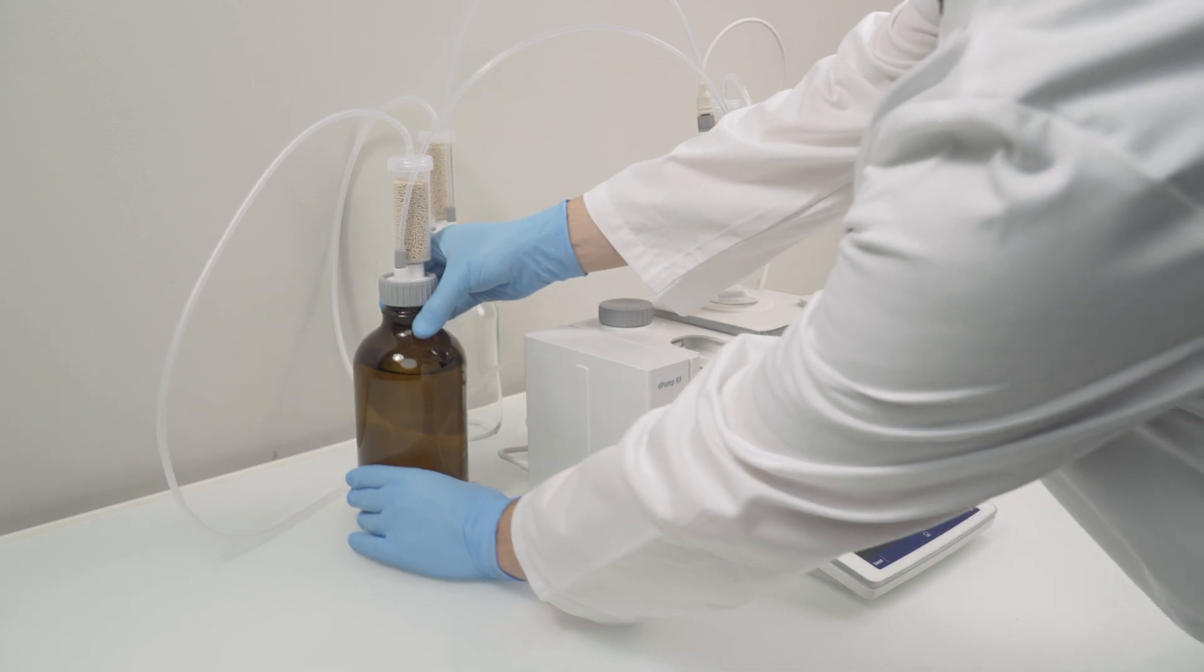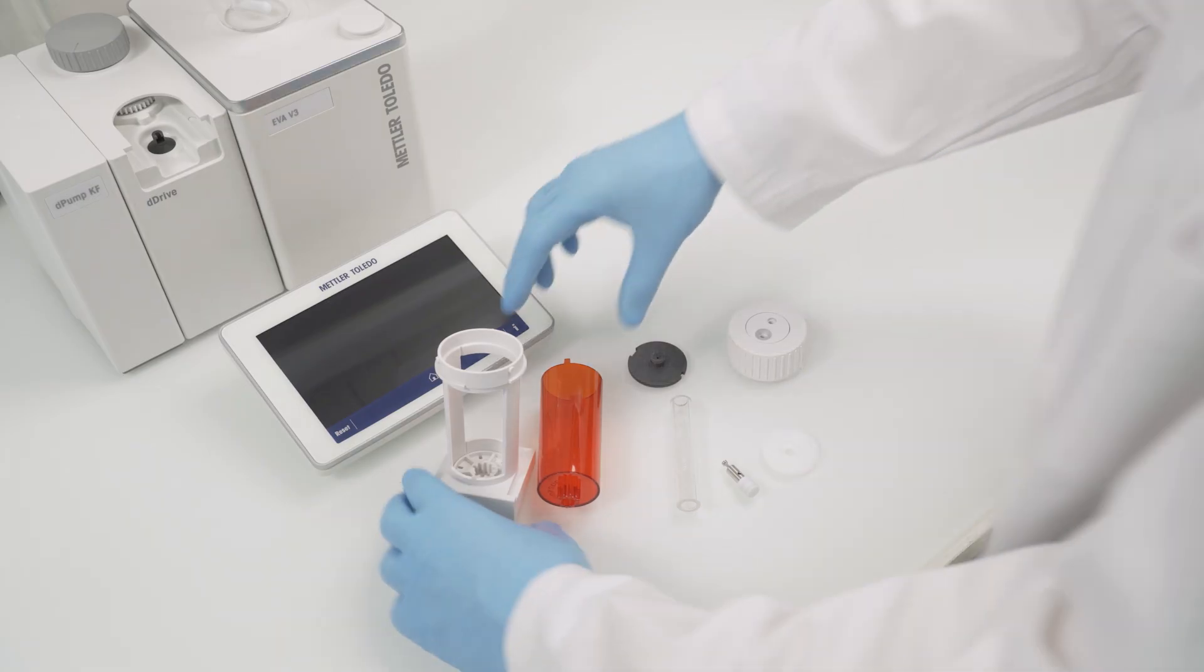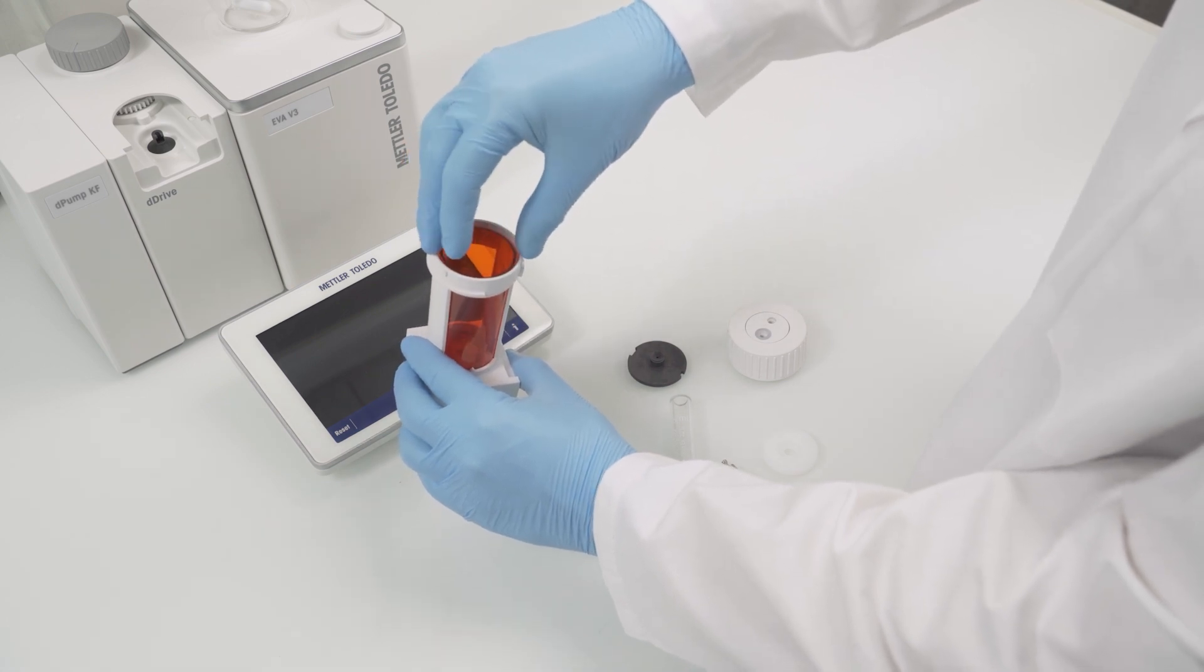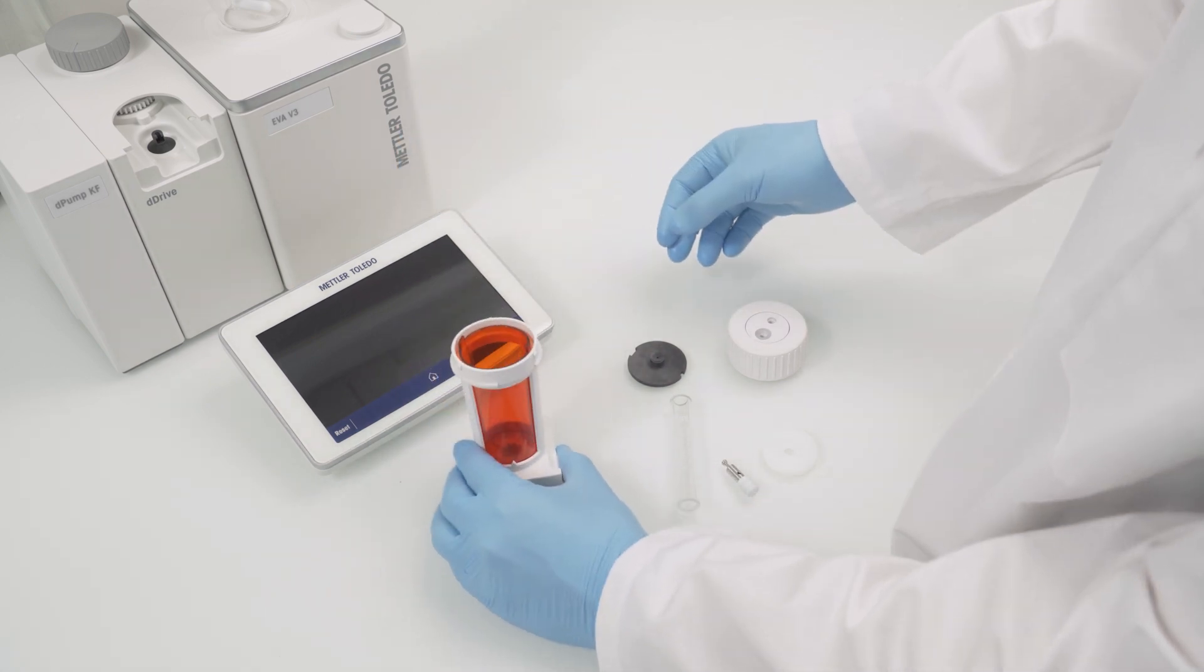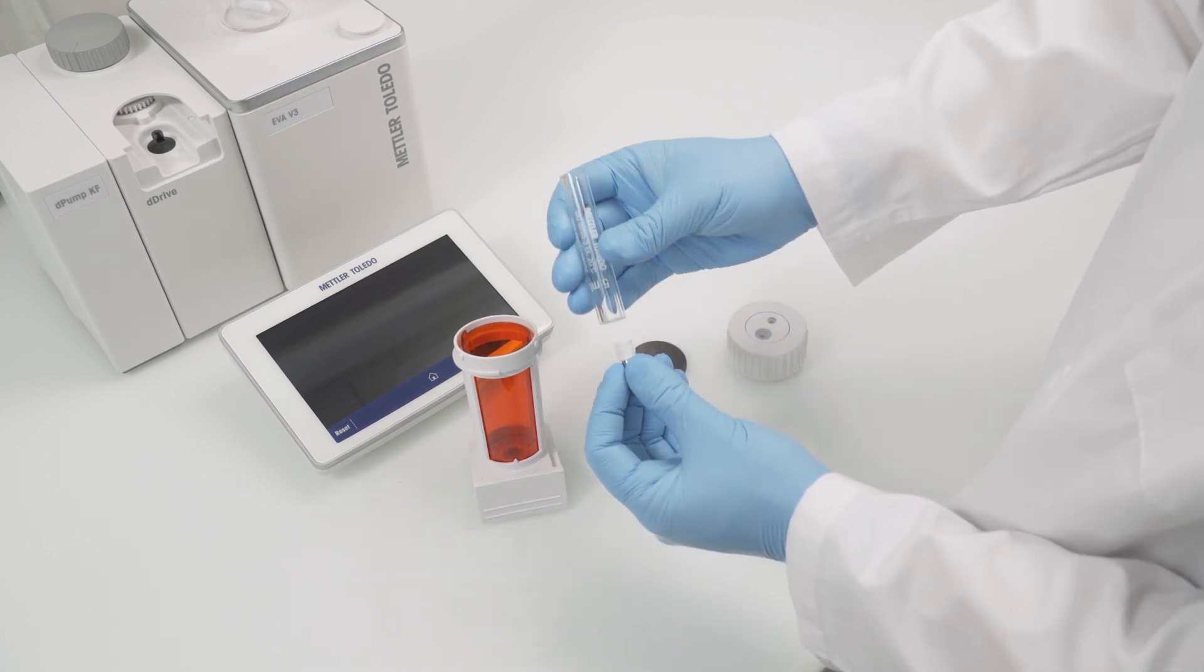Move the solvent bottle to the back. So we have enough space for the assembly of the burette. Put the red rotary encoder into the burette housing and turn it slightly until it falls down.